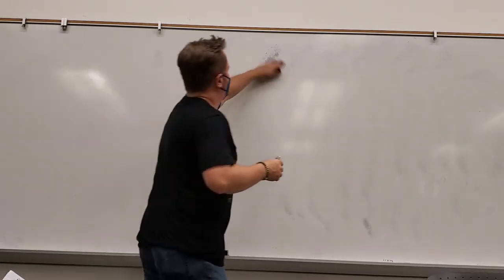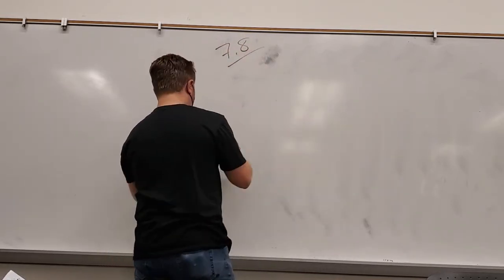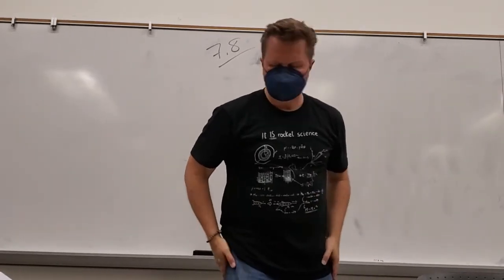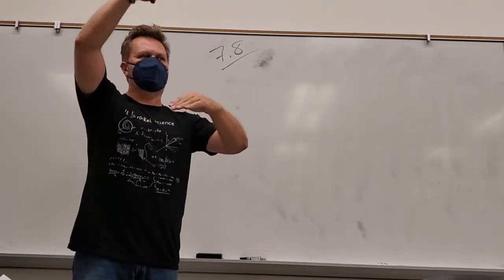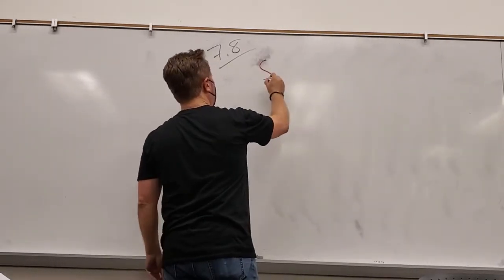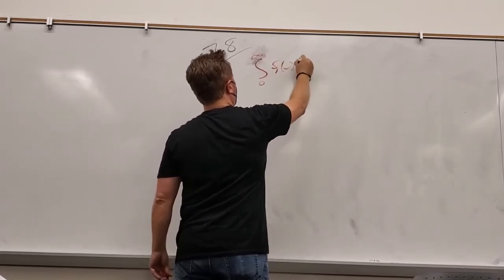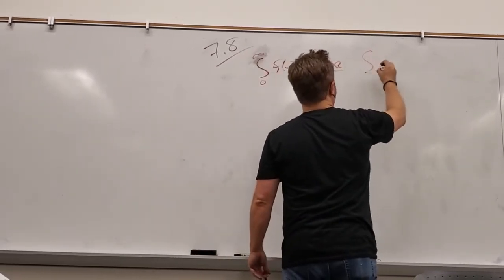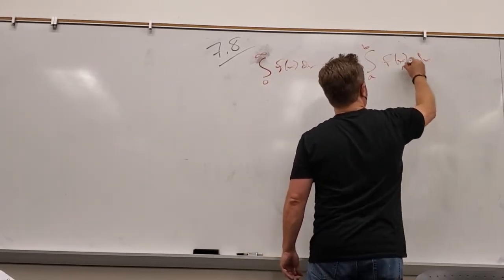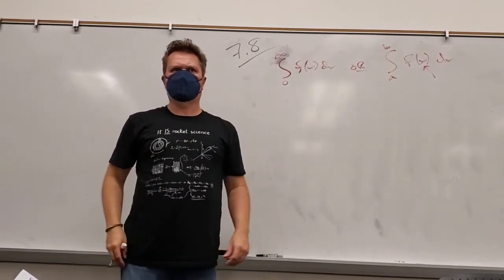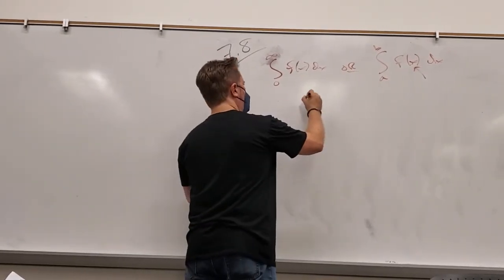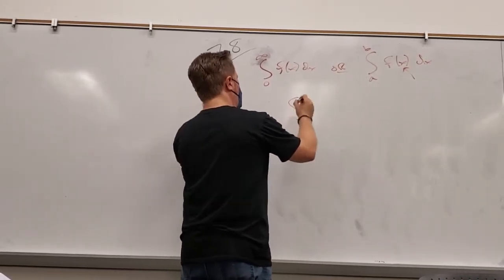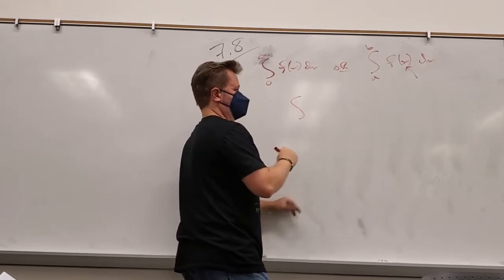Tonight we're going to finish Chapter 7 by doing section 7.8 — Improper Integrals. We'll finally figure out how to handle an integral that either has infinity in one of its limits, or where the function goes to infinity at some point between the endpoints. Let me set one up. The chapter name is 'Improper Integrals.'